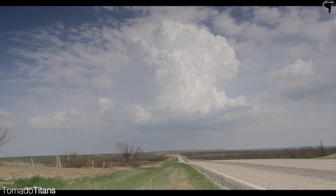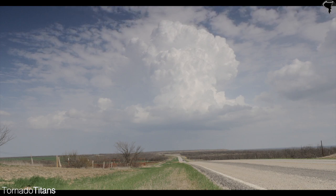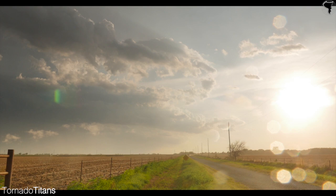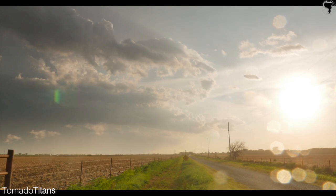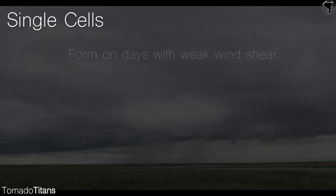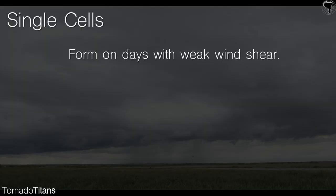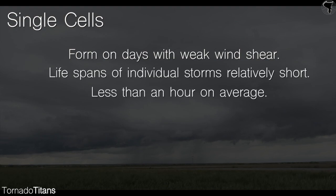Single cell thunderstorms are typically shorter lived storms with lifespans of under an hour. These storms are also known as pulse storms, as they typically form and die quickly. Single cell pulse storms typically form on days with very weak wind shear, but modest to strong instability.